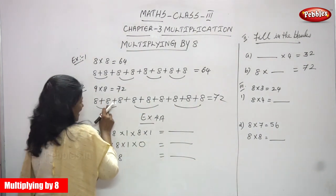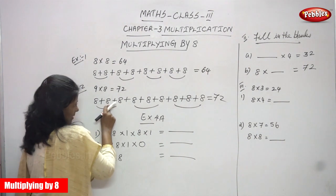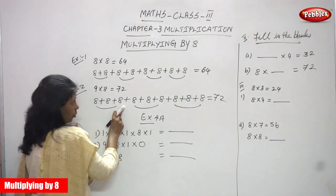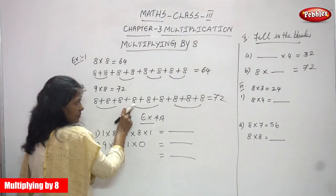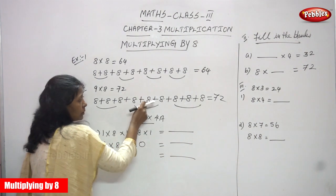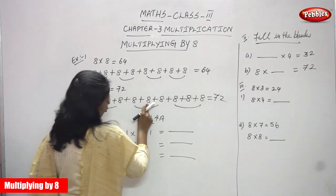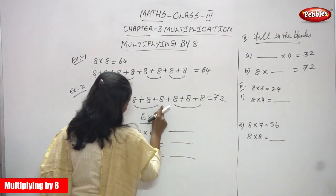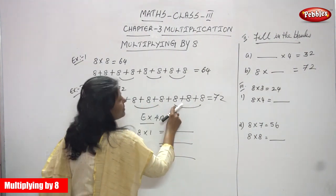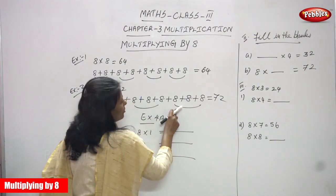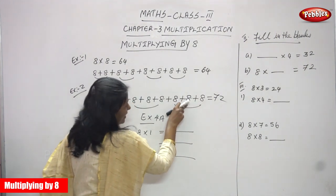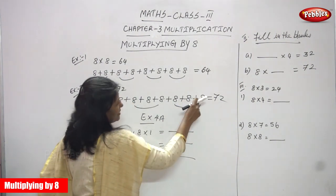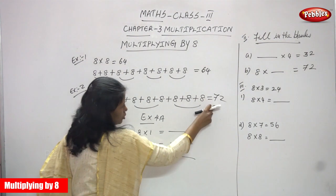8 plus 8 is 16, 16 plus 8 is 24, 24 plus 8 is 32, 32 plus 8 is 40, 40 plus 8 is 48, 48 plus 8 is 56, 56 plus 8 is 64, 64 plus 8 is 72.